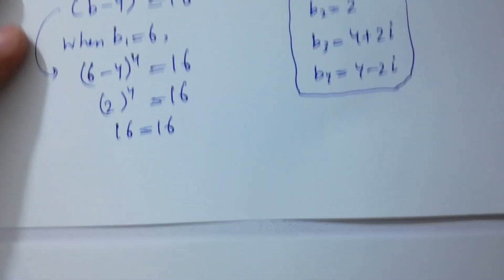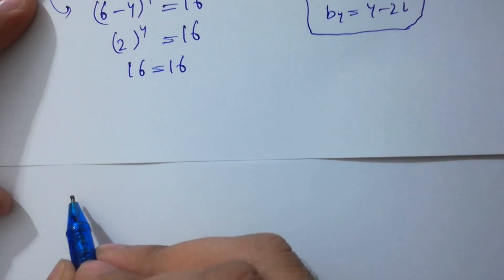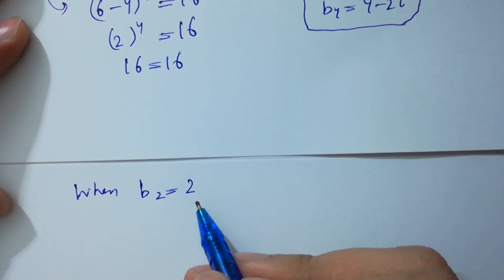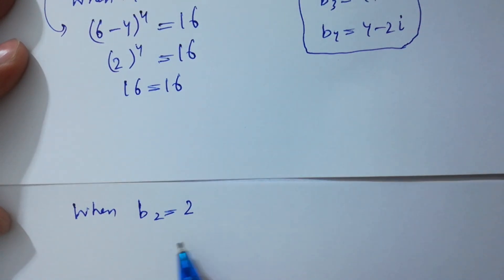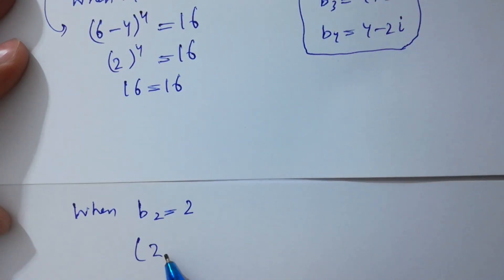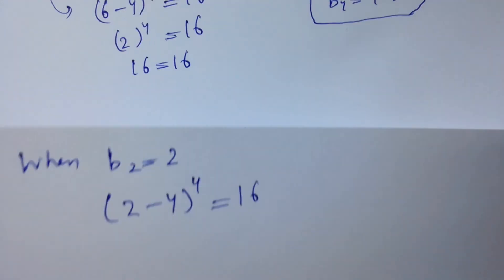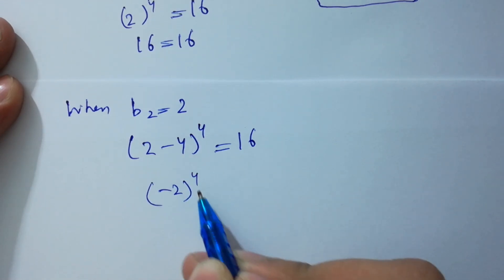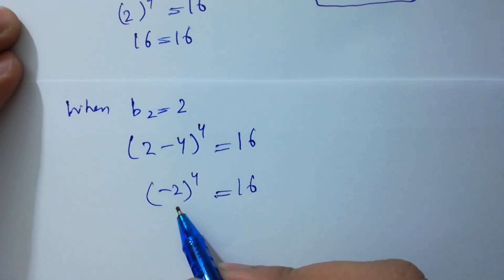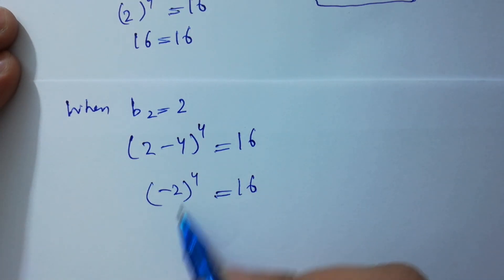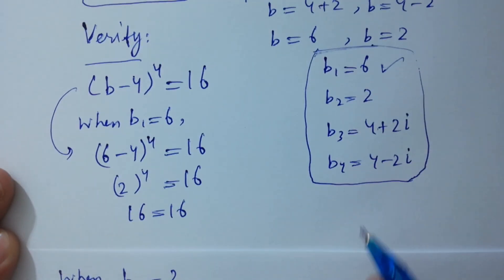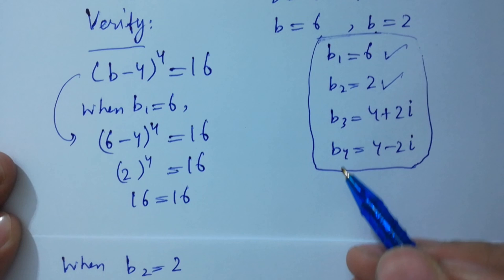Verify when b = 2: substituting, we have (2-4)⁴ = (-2)⁴ = 16. Since (-2)⁴ = 2⁴ = 16, we get 16 = 16, which satisfies the equation. So b = 2 is correct.